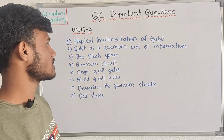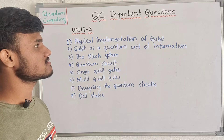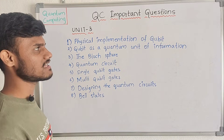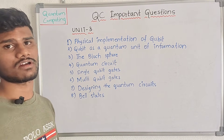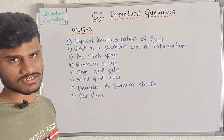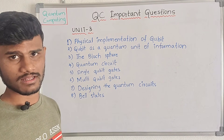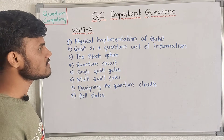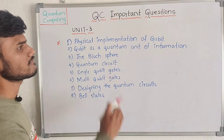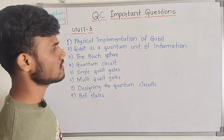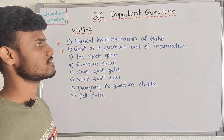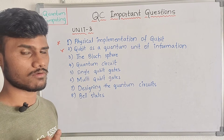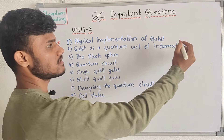Now, coming to the third unit. This third unit is completely about qubits. First is the physical implementation of qubit — qubit definition and qubit concepts. We have to implement qubit in quantum computing. The qubit plays a major role in quantum computing. The first question is physical implementation of qubit. Next is qubit as a quantum unit of implementation — that physical implementation is a quantum computing law question.